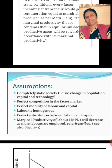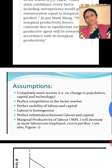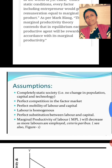Whatever capital is available to the entrepreneur remains the same, and there is no technological advancement — technology also remains the same. The second assumption is perfect competition in the factor market. There is perfect competition in both the factor market and commodity market — no imperfect competition.